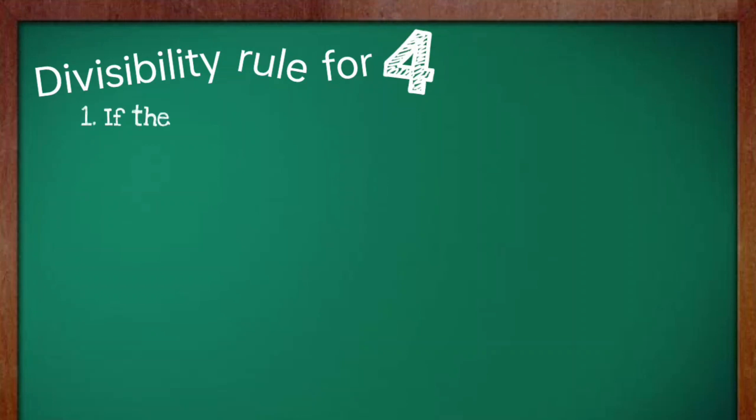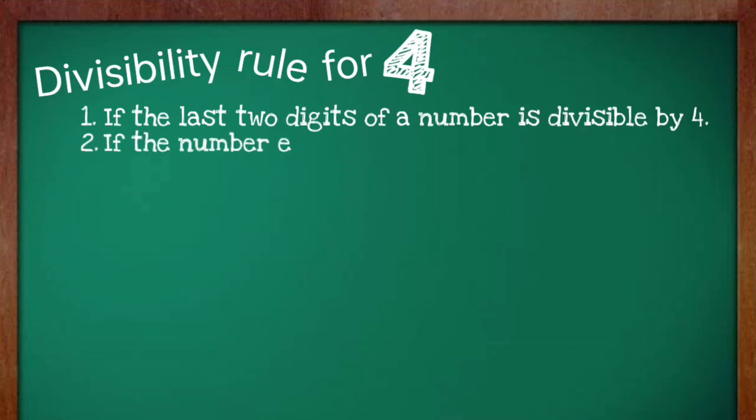Now, let's start with the divisibility rule for 4. First, if the last two digits of a number is divisible by 4, and second, if the number ends with two zeros.